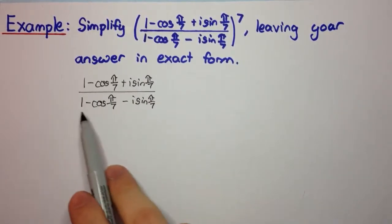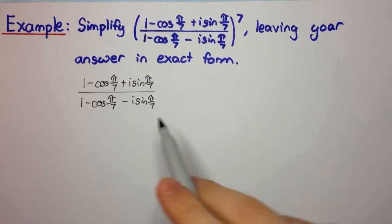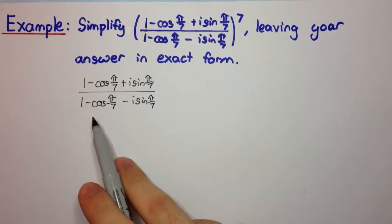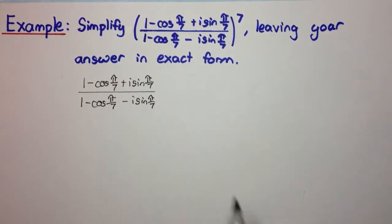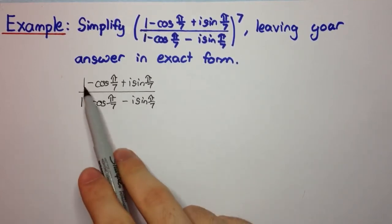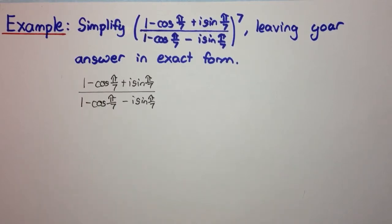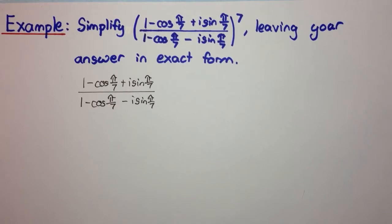First let's have a look at this expression and then we'll try to simplify it before raising it to the power 7. We can't apply De Moivre's theorem straight away because it's not in the cos plus i·sin form — we have this extra 1 here. So we need to think of a way to eliminate this 1 while still having cos plus i·sin.